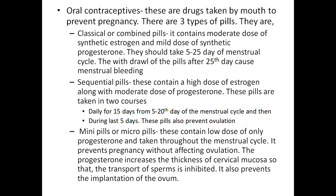Sequential pills contain a high dose of estrogen along with a moderate dose of progestogen. These pills are taken in two daily courses for 15 days, from the 5th to 20th day of the menstrual cycle. During the last 5 days, these pills also prevent ovulation.